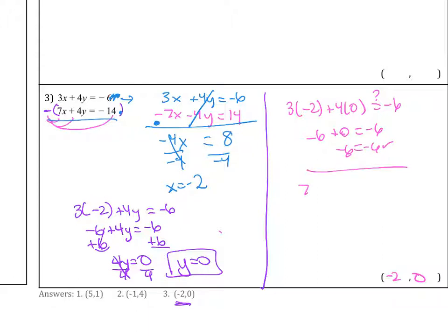Let's try the bottom one. 7 times negative 2 plus 4 times 0 equals negative 14. So again, I'm just plugging in my x values into this second equation, the y value into this equation, and I want to see if I get a true statement. If I do, that means that this is correct. But it has to work in both.